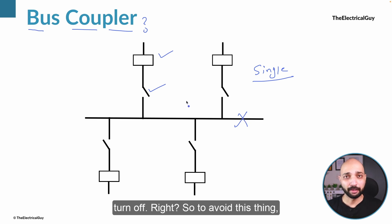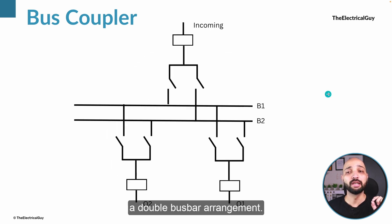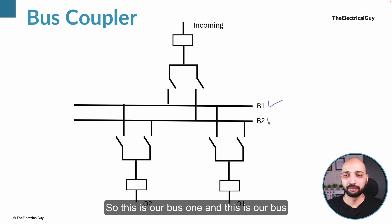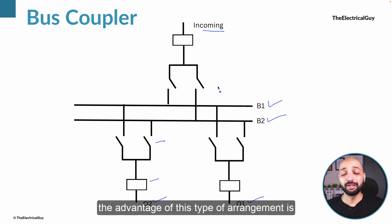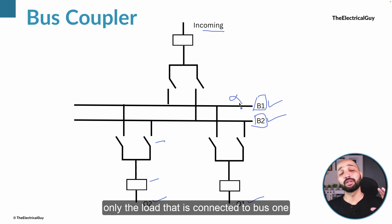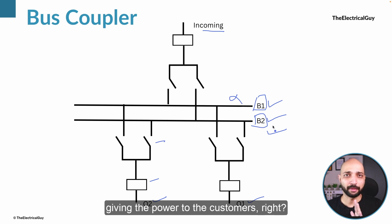To avoid this, we can make a variation and use a double bus bar arrangement. What you can see on your screen is a simple double bus bar arrangement — this is bus one and this is bus two. We have one incoming bay, one outgoing bay, and outgoing bay two. The advantage of this arrangement is that you can connect some load on bus one and some load on bus two, so if there is a fault on bus one, only that load suffers while bus two keeps supplying power to customers.